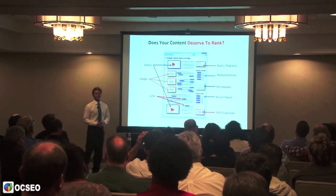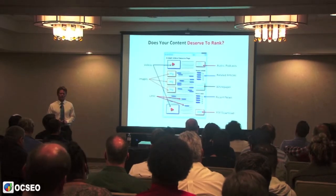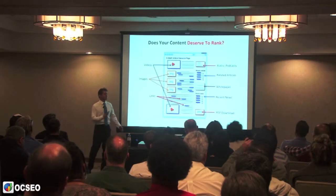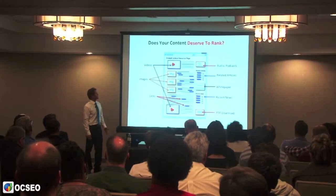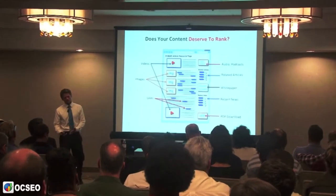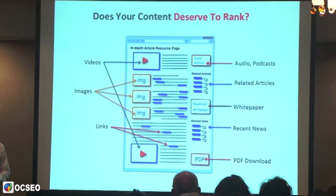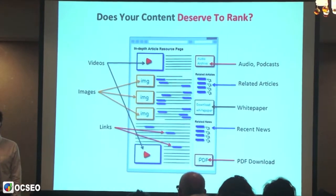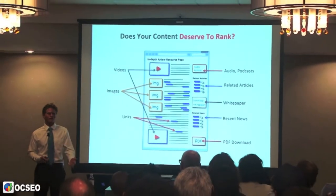This is a diagram example of potentially what a page on your website could look like — not a proven concept, just a visual rendering of how a page could look. You've seen pages like this, where there's videos, images, a download, related articles, maybe a white paper. Google and the other search engines love resources like this because they're chock-full of useful data and information that they know will serve the user.